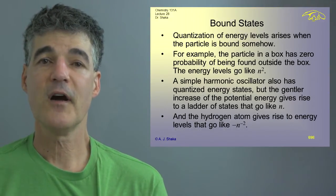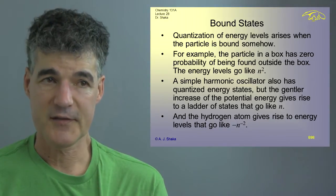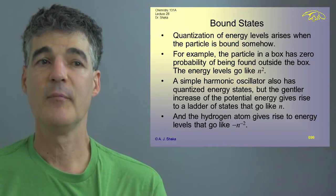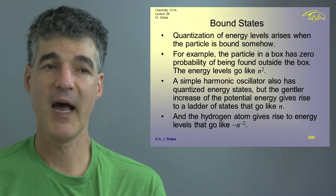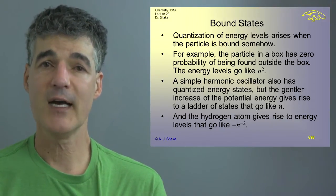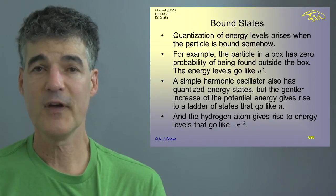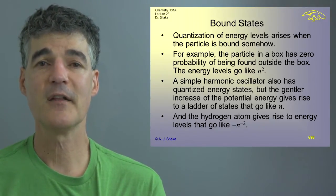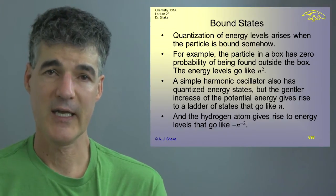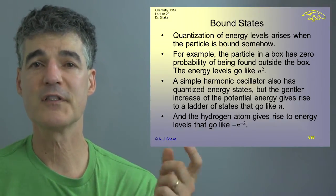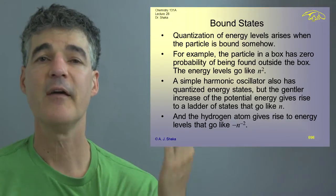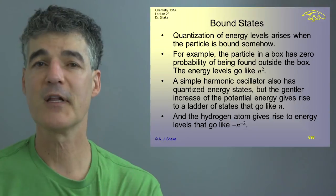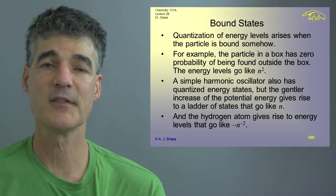Then we talked about bound states and quantization of energy. It arises somehow when the particle is bound. And the reason it arises in the most fundamental reason is because the wave function has to fit into the space allocated to it. And it can't come round, for example, on a ring and have a different phase than when it went around before. It has to match up perfectly. Otherwise, it interferes with itself.